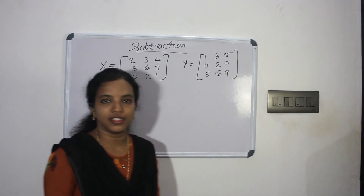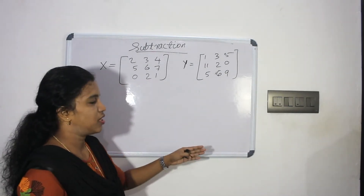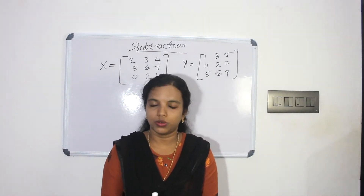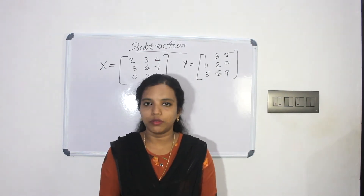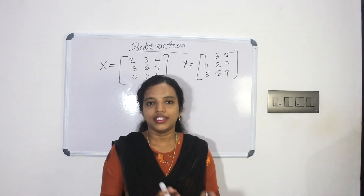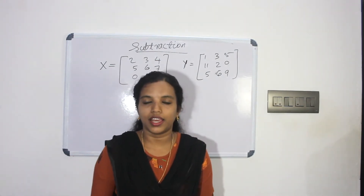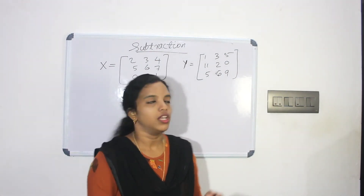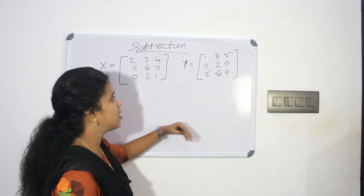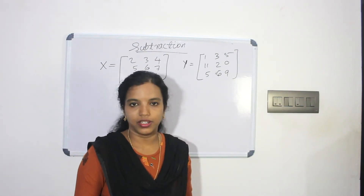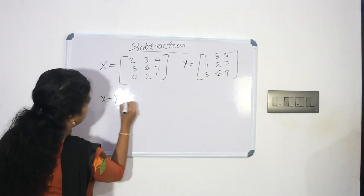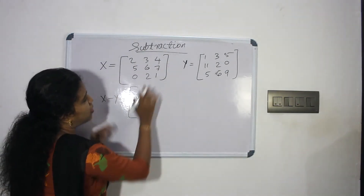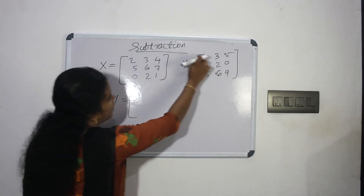We will add the 3x3 matrices, then do subtraction. We compute A plus B and A minus B using the same approach. After subtraction, the answer for Y minus X and X minus Y is found by subtracting corresponding elements.